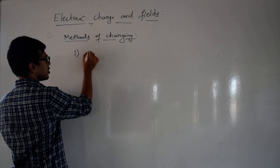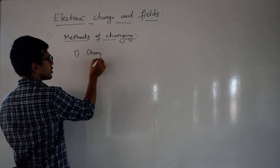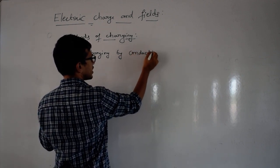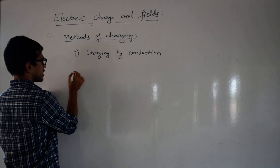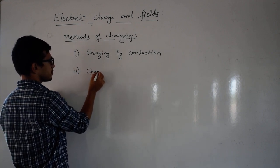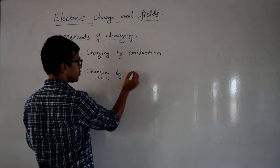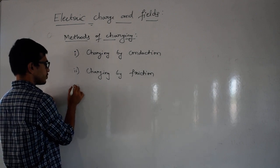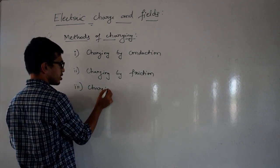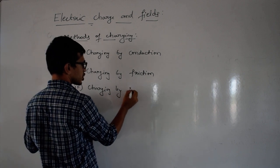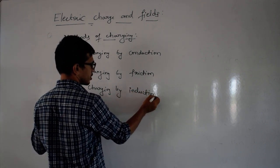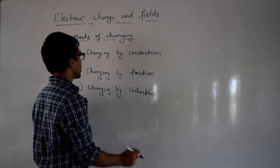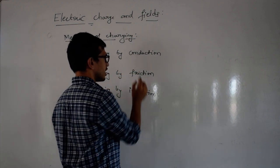The first type is called charging by conduction. The second category is called charging by friction. And the third type is charging by induction. These are the three different types of methods of charging.